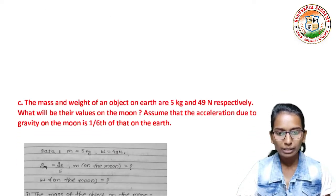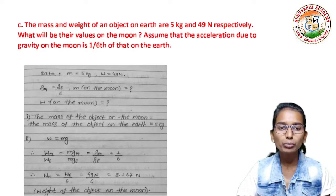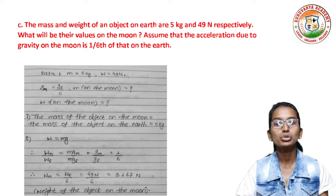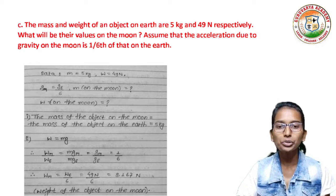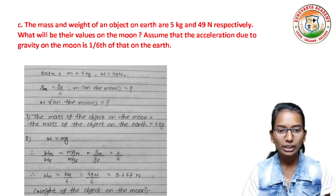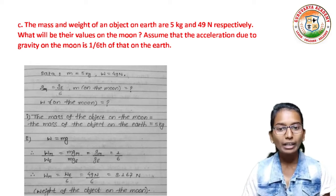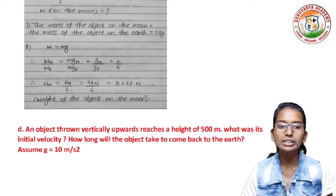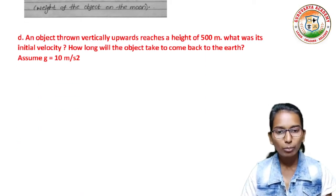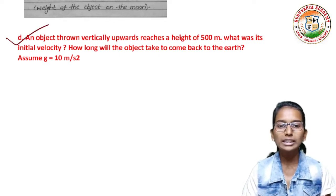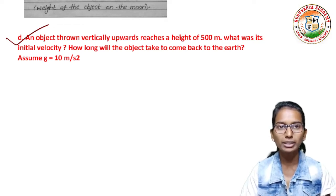Third example: the mass and weight of an object on Earth are 5 kg and 49 N respectively — what will be their values on the moon? Assume the acceleration due to gravity on the moon is 1/6th of that on Earth.